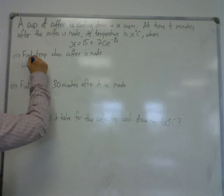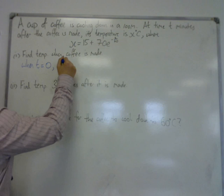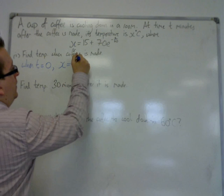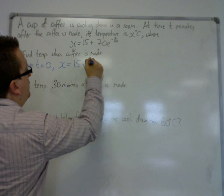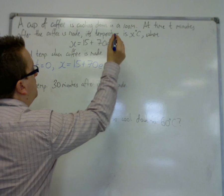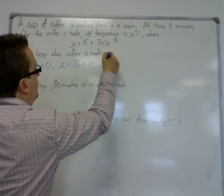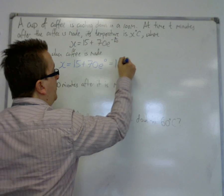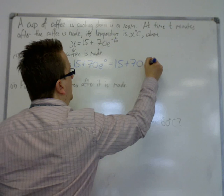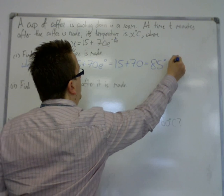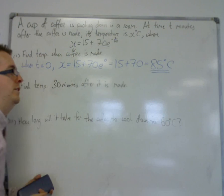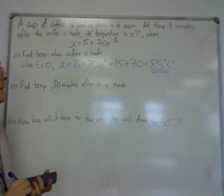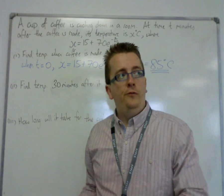When t equals zero, the temperature x is 15 plus 70 e to the minus zero over 40. That's just zero. E to the zero is just one, so this is 15 plus 70. We started off at 85 degrees centigrade. That's the simple first part question.